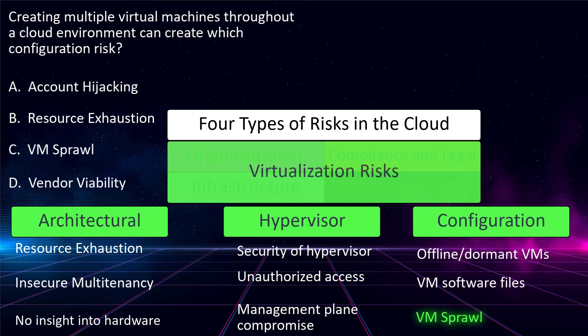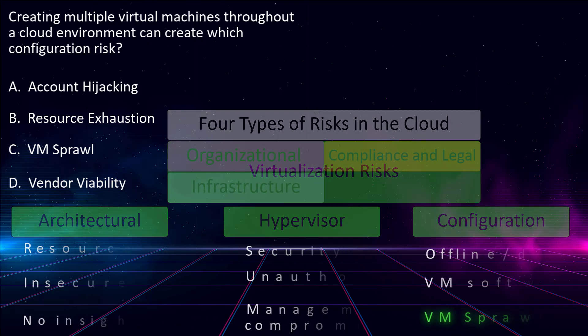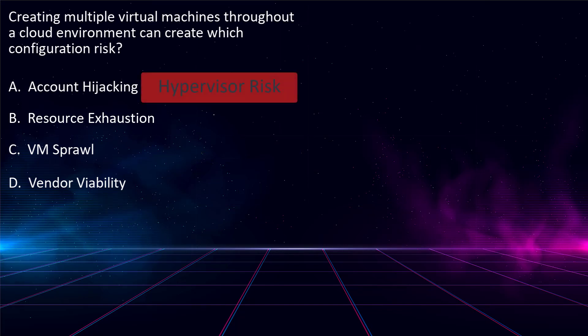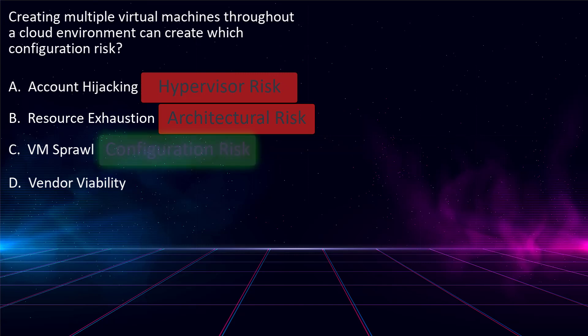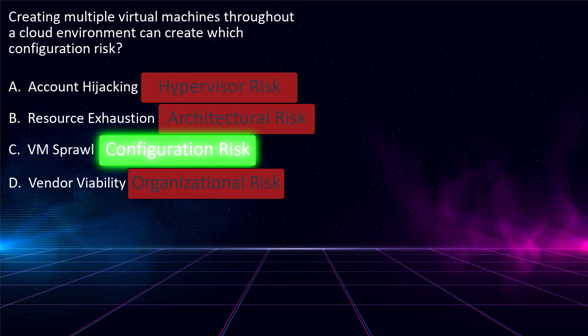Virtualization and cloud computing makes adding assets to your organization as simple as clicking a button, encouraging cloud computing characteristics like rapid elasticity, scalability, and multi-tenancy. But be careful who has the power to create VMs. Try not to click that button too many times without a plan in place, the right approval through a proper change management process, and good access control. In short: account hijacking is a hypervisor risk; resource exhaustion is an architectural risk; VM sprawl is the only choice that is a configuration risk; and vendor viability — the ability to gauge whether a cloud vendor will still be in business while you're using its services — is an organizational risk, not a configuration risk.